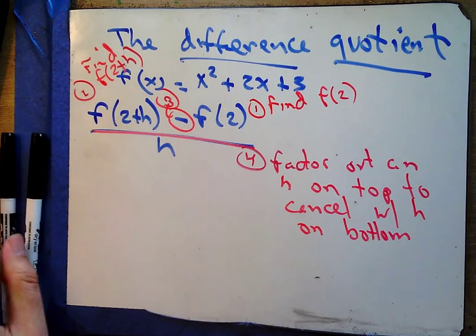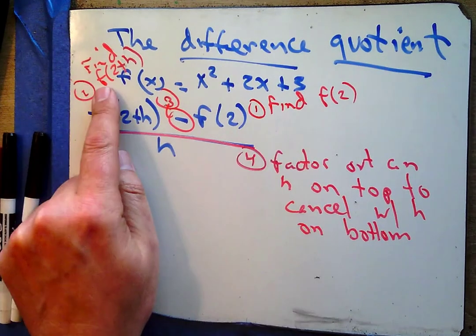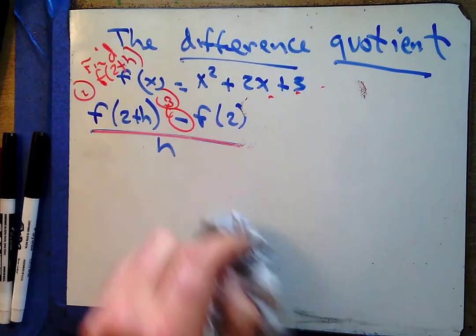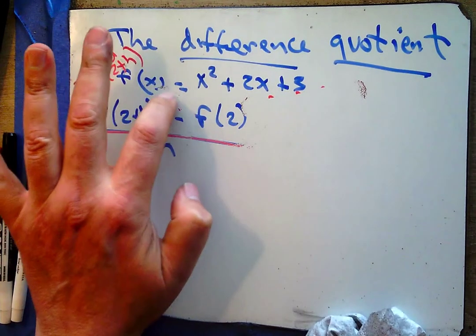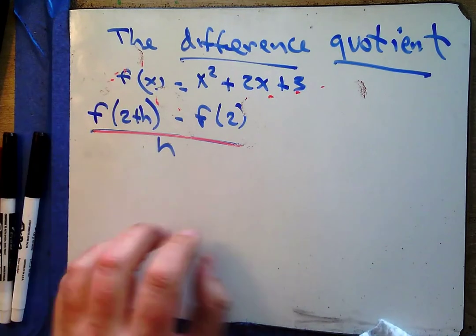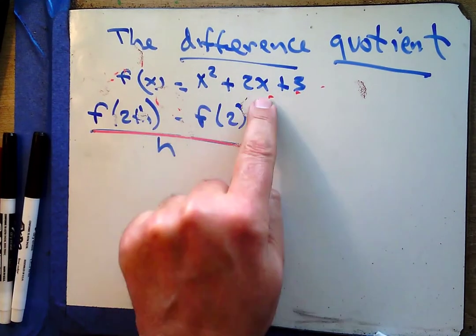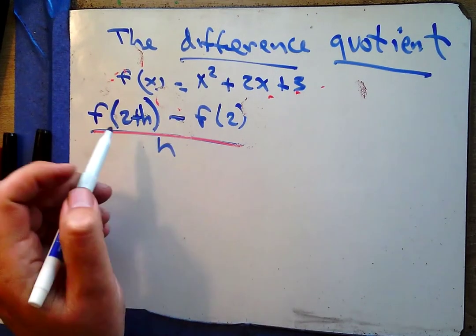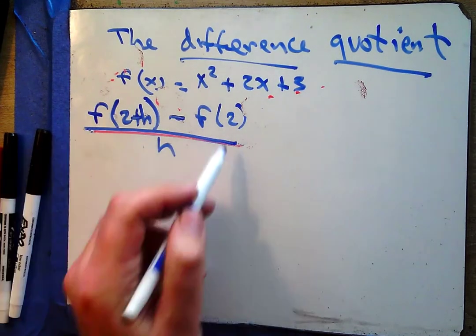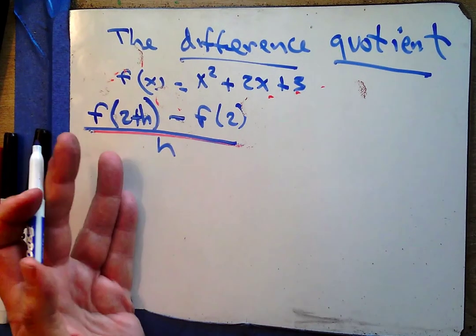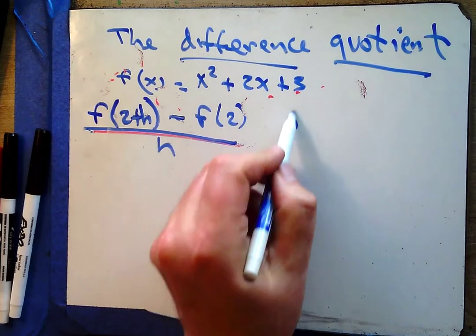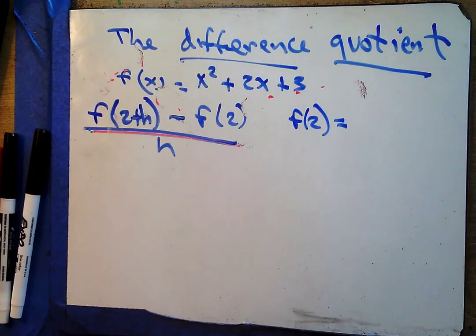We're going to find f(2), find f(2+h), subtract them, and then divide by h. Some students look at this difference quotient and start hyperventilating — I've even seen students try to plug the expression into the x's, but that's not what this is saying. To me, this difference quotient is a recipe: find this, find this, subtract them, divide by h.